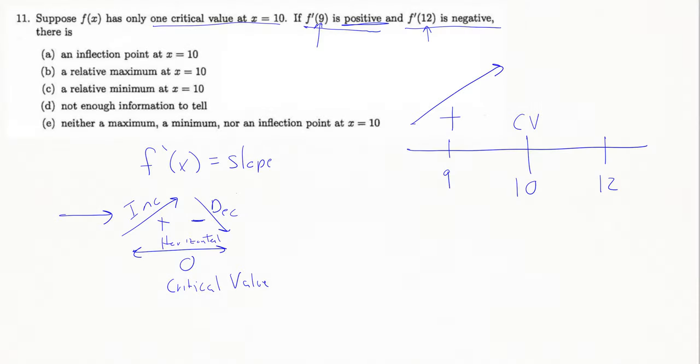And then on the other side, it's telling me that f prime at 12 is negative. So I've got a negative sign there, and negative tells me that my graph would be decreasing.